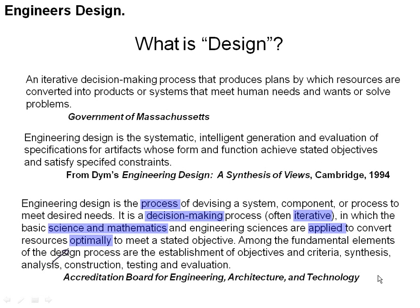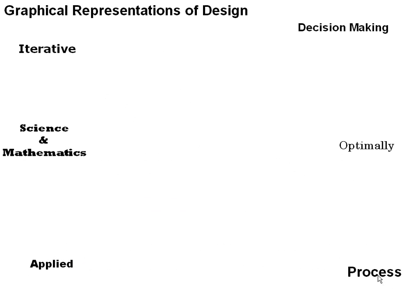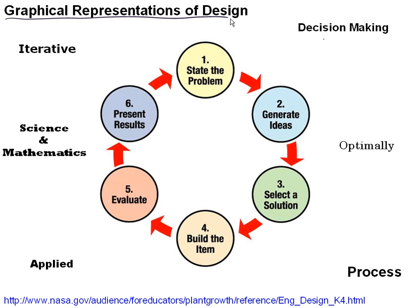Because any of these definitions are quite a mouthful and it's hard to keep six or seven words straight in your head, what often happens is that we represent design graphically. I've taken the key words highlighted in the ABET definition and let's look at some graphical representations of design downloaded from the Internet. This is a design problem from NASA for kindergarten through twelfth grade educators that involves stating a problem, generating ideas, selecting a solution, and so on. You see there's an iterative cycle — things go round and round in a circle — which captures the iterative aspect of design, and it is in fact a process.